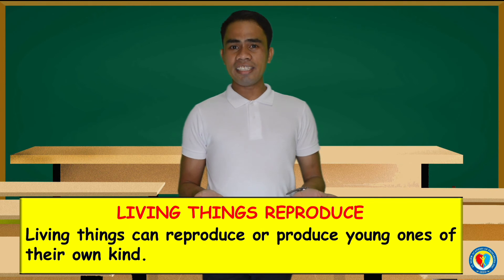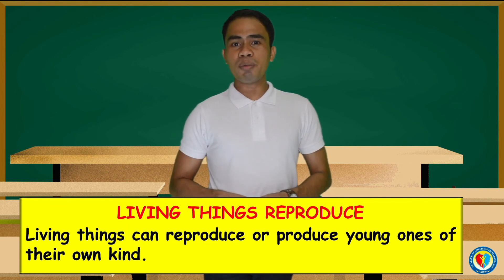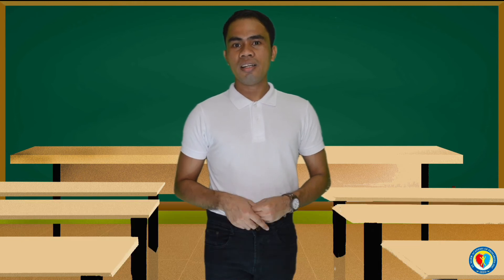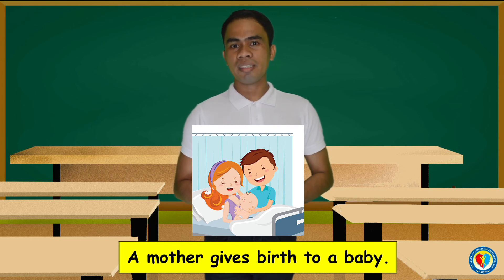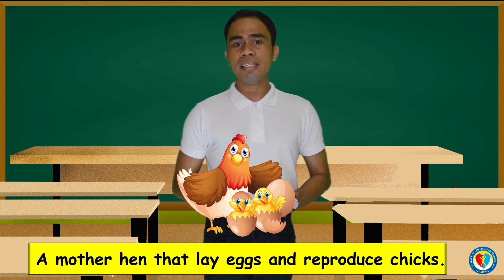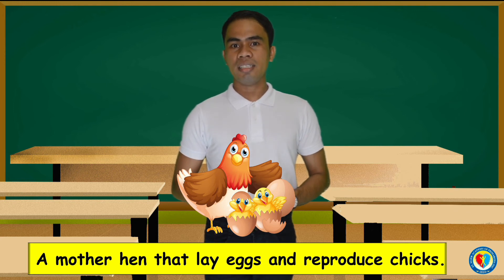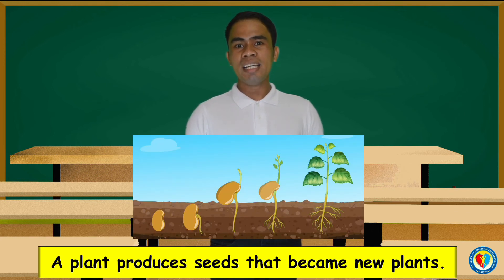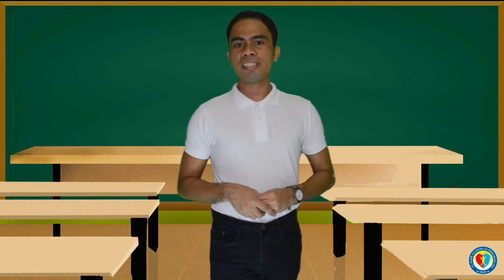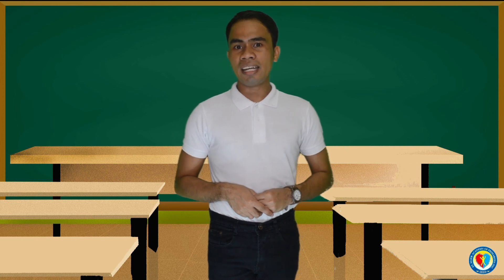The next characteristic is living things reproduce. Living things can reproduce or produce young ones of their own kind. For example, a mother gives birth to a baby. Another example, a hen lays eggs that become chicks. And a plant produces seeds that become new plants.